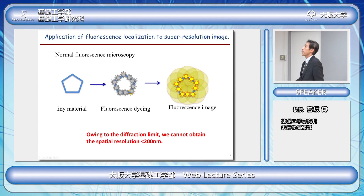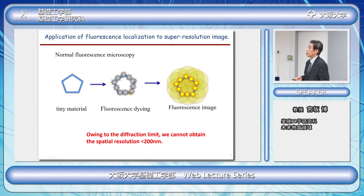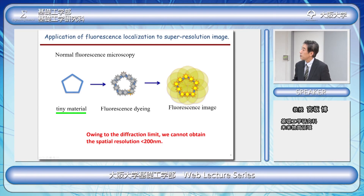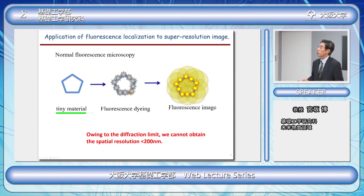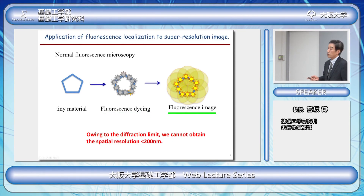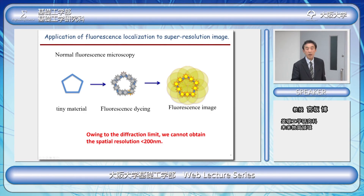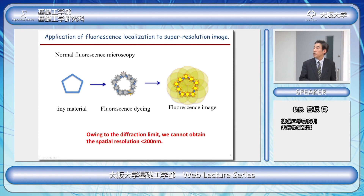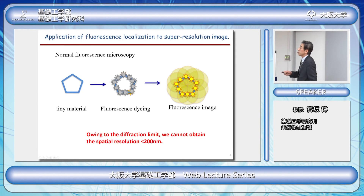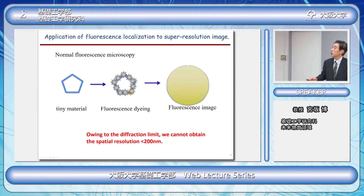Before talking about super-resolution further, I am going to introduce the fluorescence microscope. A normal fluorescence microscope image can be obtained as follows. Please imagine this is the material you want to see — a pentagon shape — and we put fluorescence dye onto this material selectively. We excite this material and obtain fluorescence. Each fluorescence molecule can emit light, but the spot size is diffraction limited — about 200 to 300 nanometers in diameter. As an integration of all the molecules, what we get as an image is blurred, so we cannot get the pentagon shape by normal fluorescence microscopy.